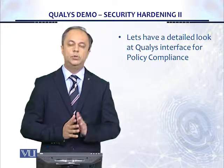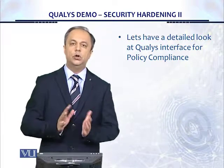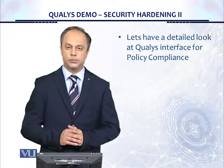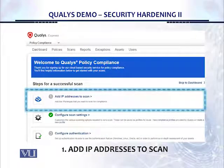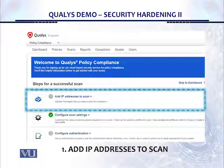We're going to be using Qualys for the security hardening purpose. This is the screen we have for policy compliance, and as we had shown before, there are five steps. If you click on the first menu item, 'Add IP addresses to scan,' then you'll be taken to a new screen.